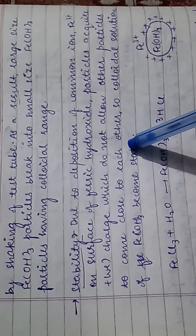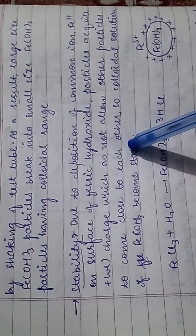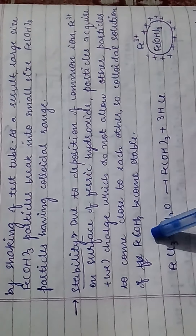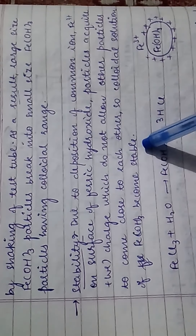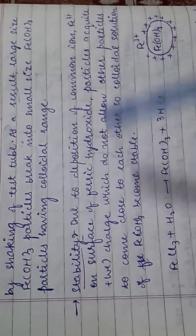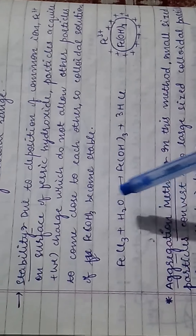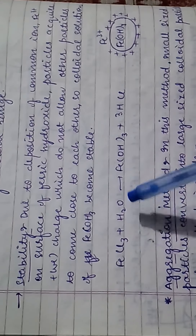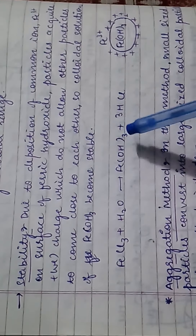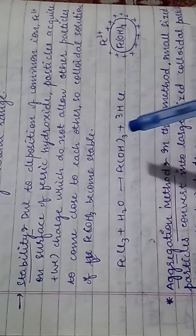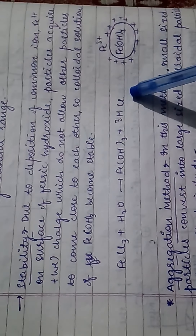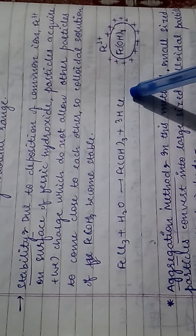Since the particles repel each other, they do not aggregate, and so the colloidal solution of Fe(OH)3 is stable. The reaction is: FeCl3 + H2O → Fe(OH)3 + 3HCl.